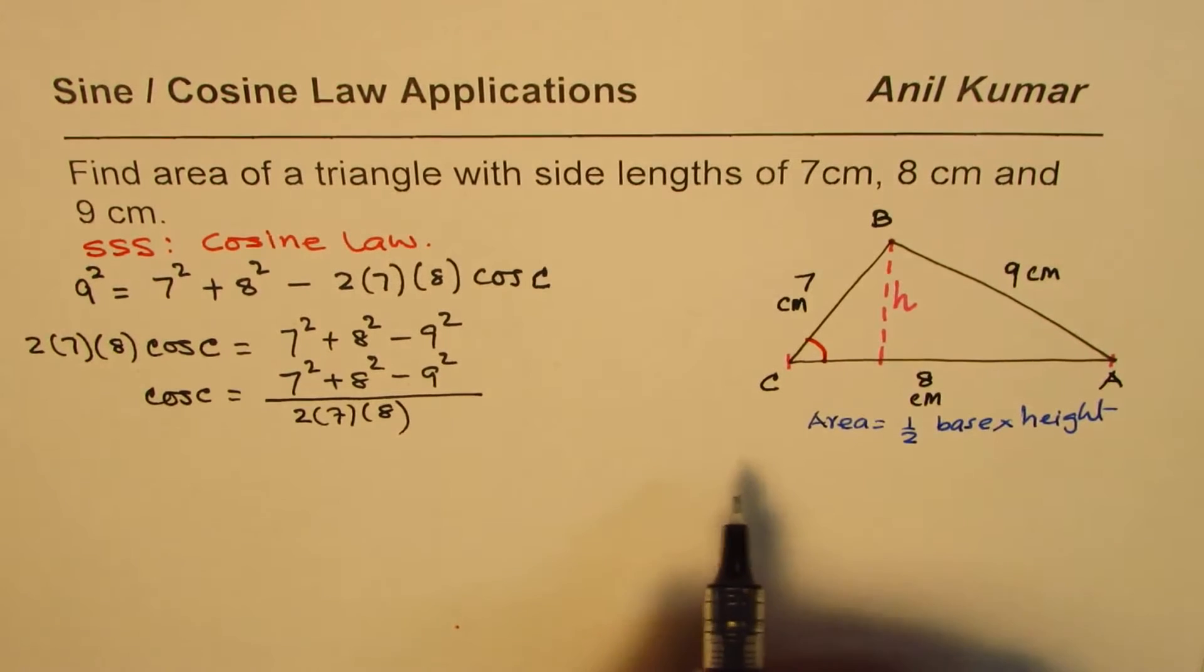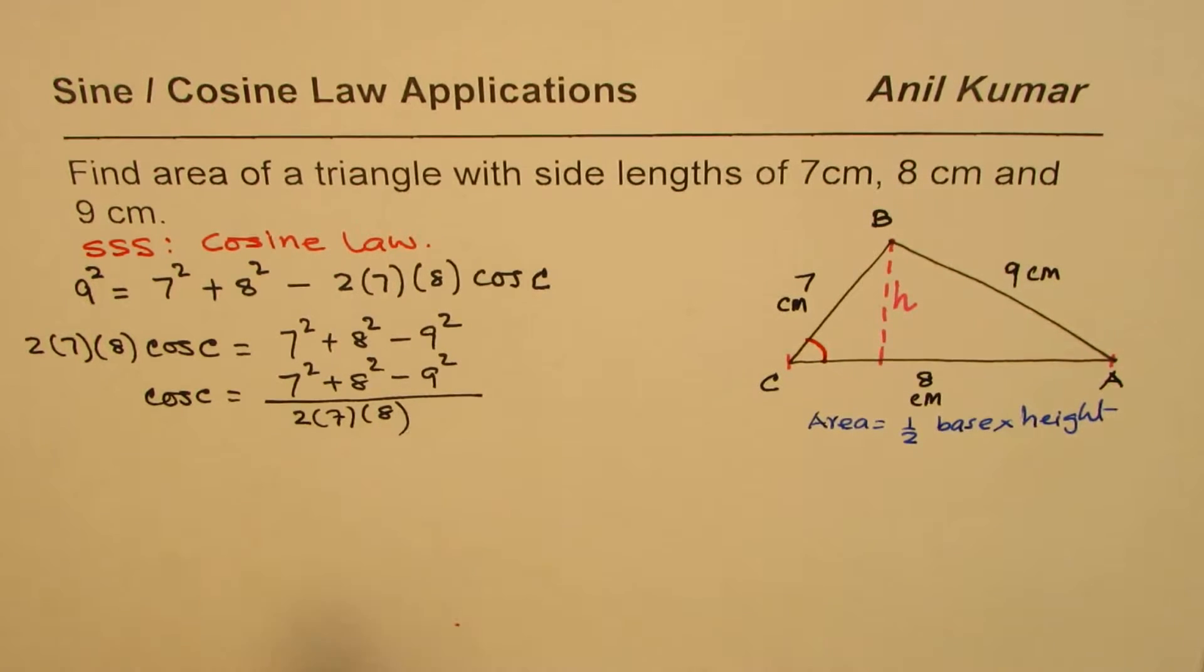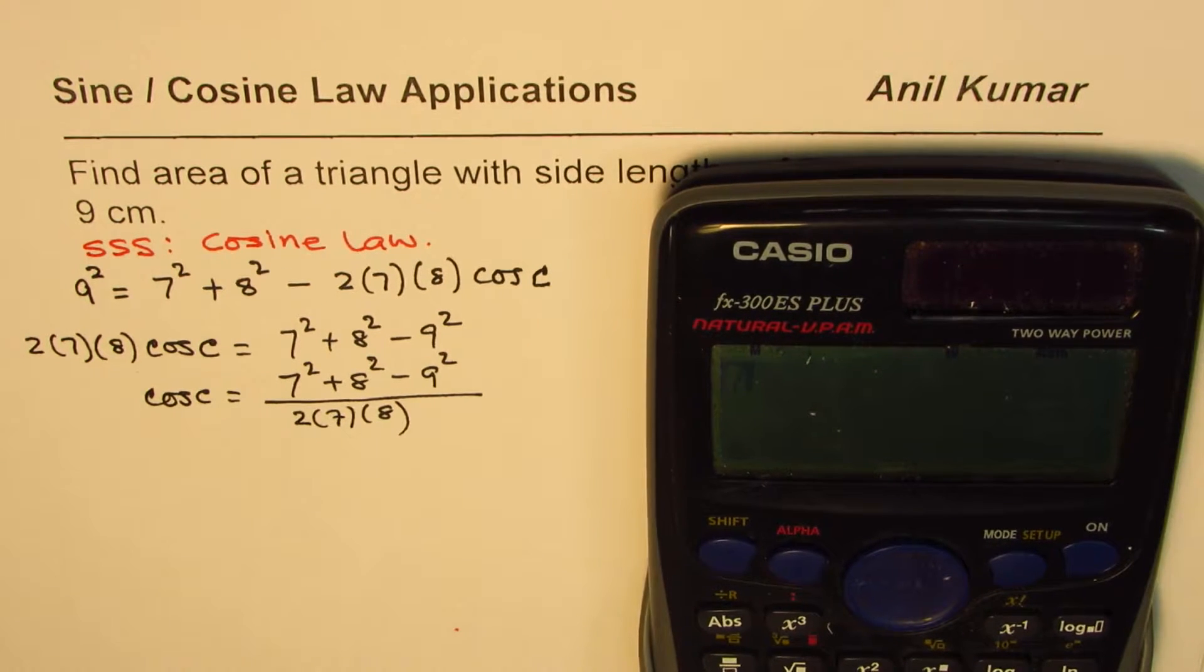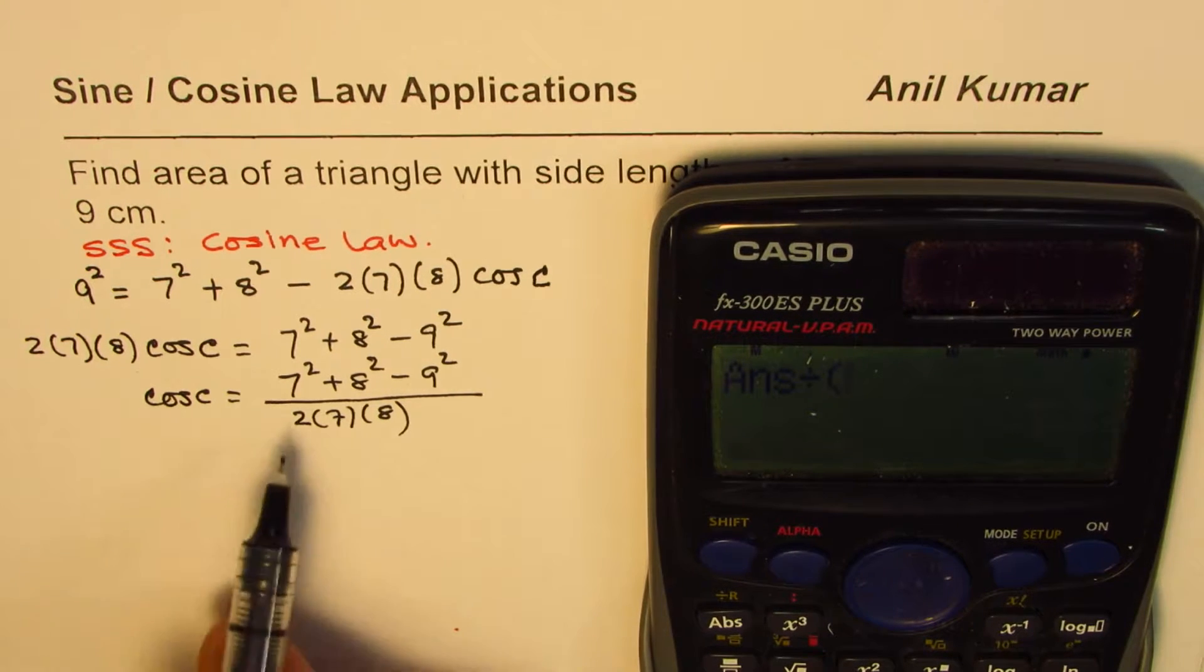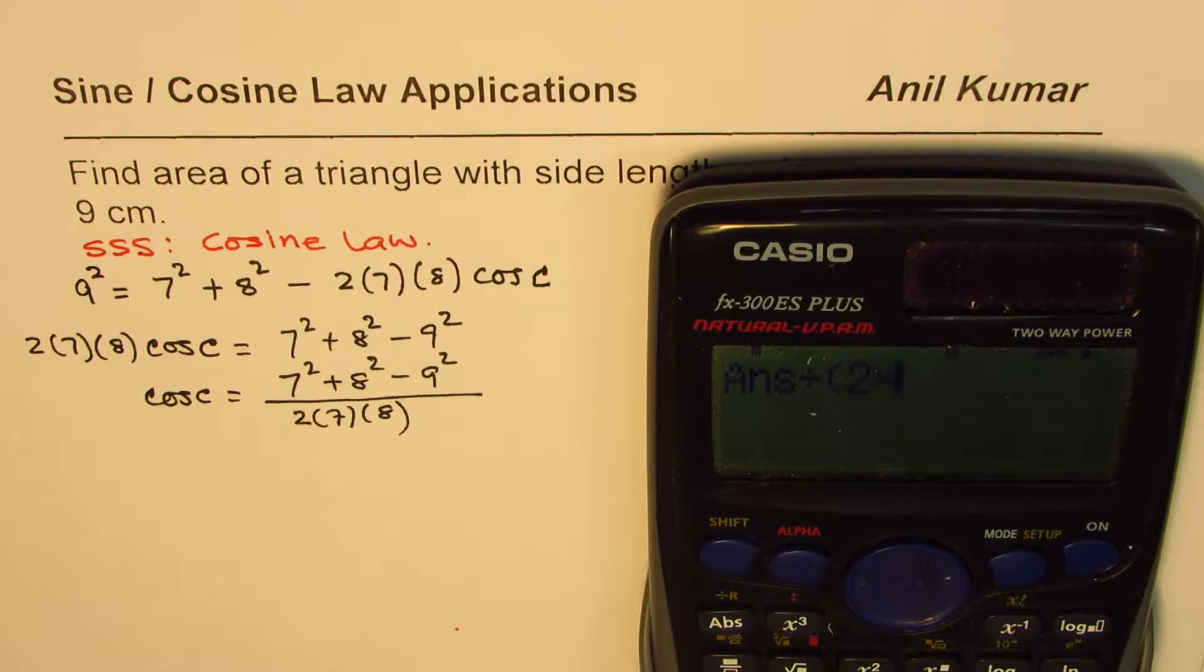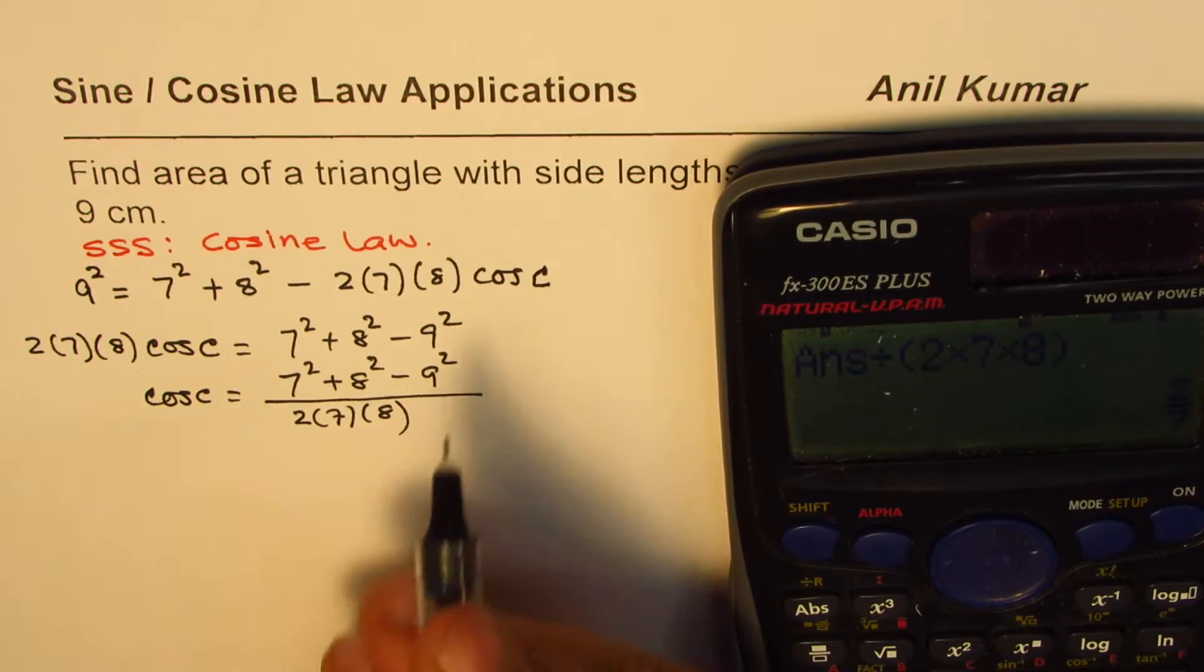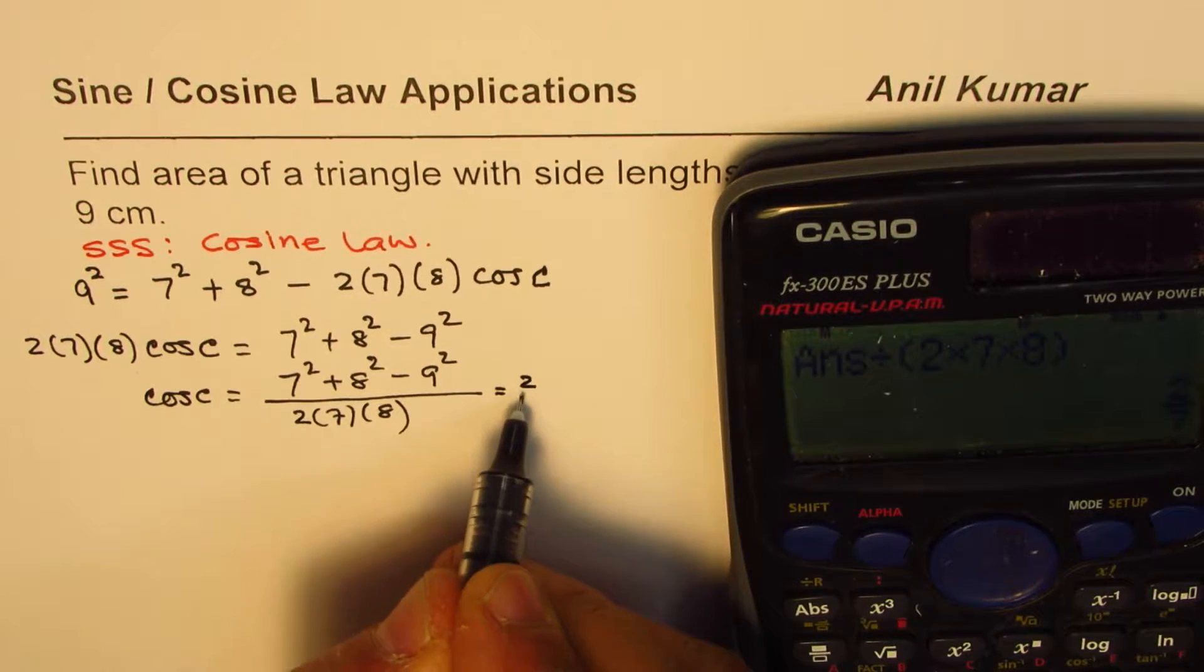And then C is cos inverse of that. So it becomes too complicated, let us calculate at this stage. So cos C is 7² + 8² - 9². It's a good idea to calculate this value. 32 divided by, and put every number in bracket, 2 times 7 times 8. So we get 2 over 7.